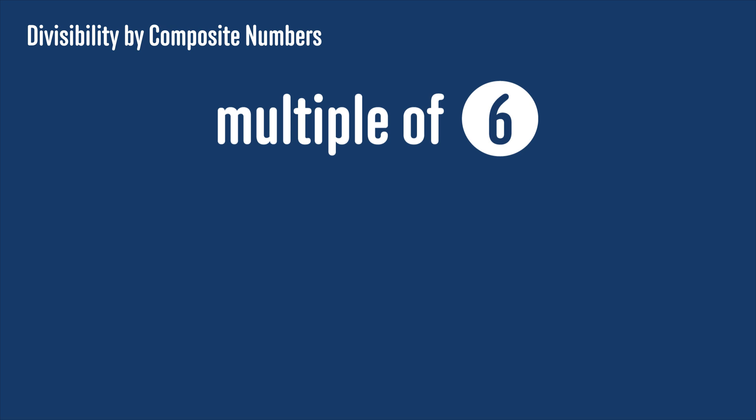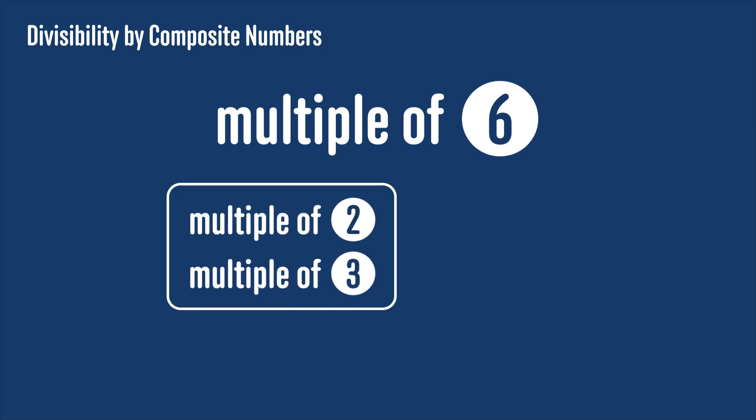So to test if a number is a multiple of 6, we can just check if the number is a multiple of 2 and a multiple of 3, because 2 and 3 are prime, and so they definitely don't share any factors. So a number is a multiple of 6 if and only if it's an even multiple of 3, and you can use the digit sum test as before to check if it's a multiple of 3.